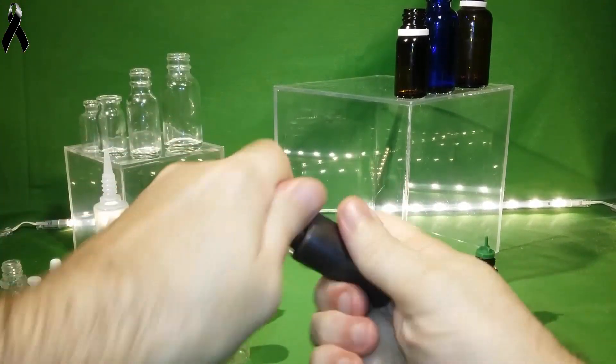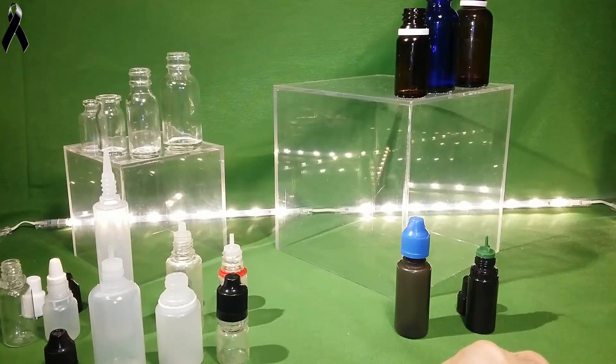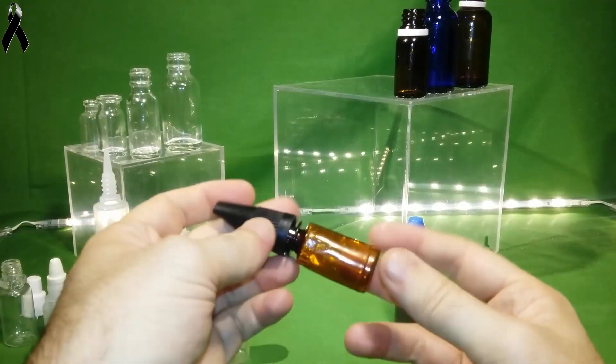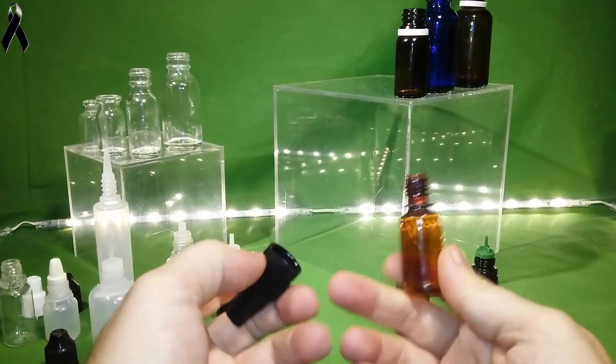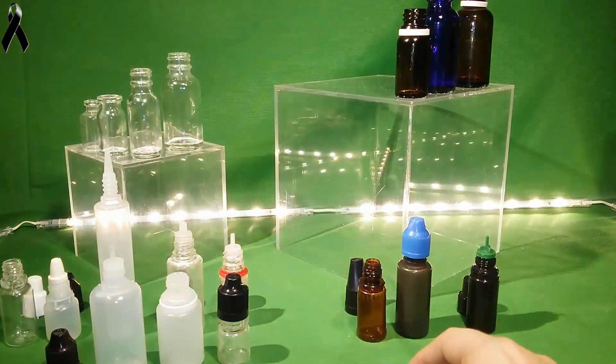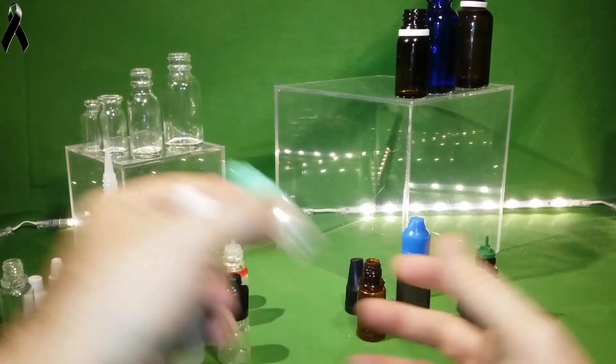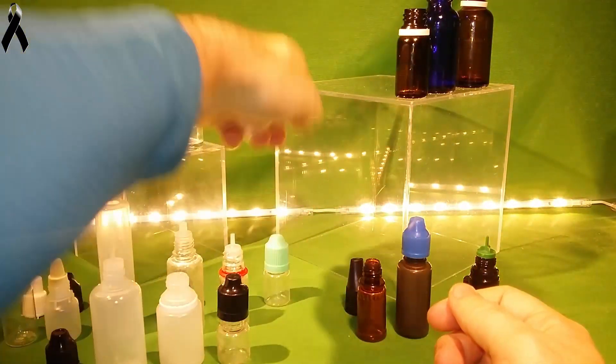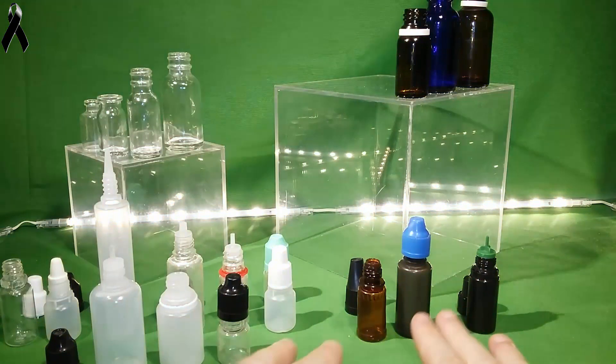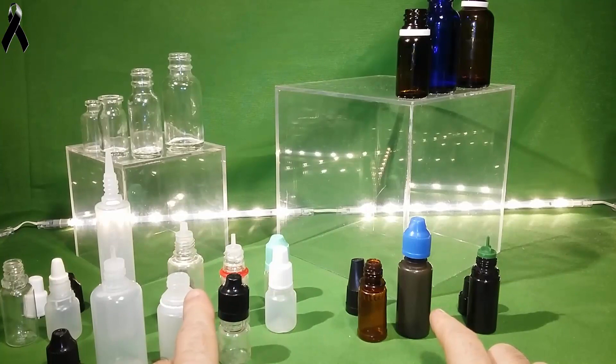Pero los correctos son los oscuros, ¿vale? Si os acordáis esto es Decan, es una marca muy conocida y los productos de Decan venían en este tipo de botes. Este tipo de botes que son más oscuros son mejores que este tipo de botes que son más claros. ¿Por qué son mejores? Porque el líquido que almacenaremos en su interior aguantará muchísimo mejor.